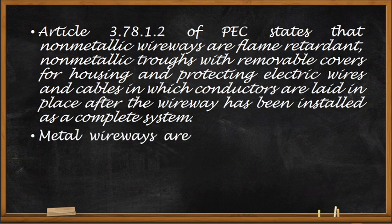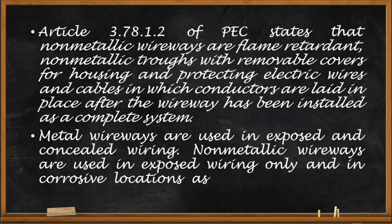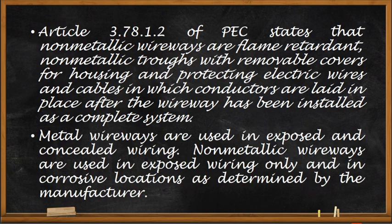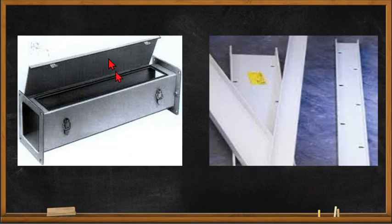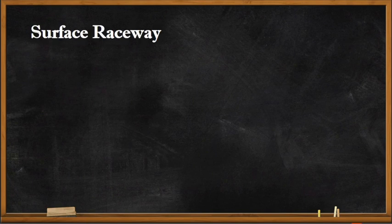Metal wireways are used in exposed and concealed wiring, while non-metallic wireways are used in exposed wiring only and in corrosive locations as determined by the manufacturer. Non-metallic wireways are preferred for corrosive locations because using metal wireways there would cause the metal to rust. This is an example of a metallic wireway and this is the non-metallic wireway.